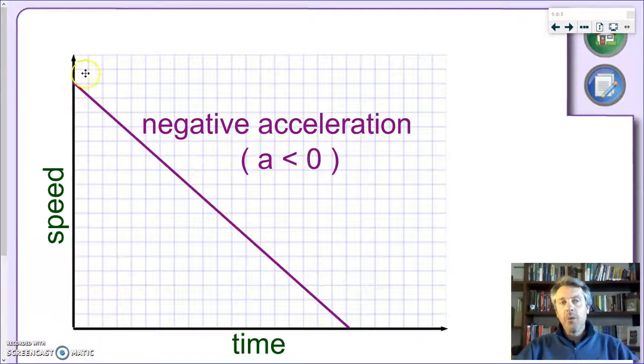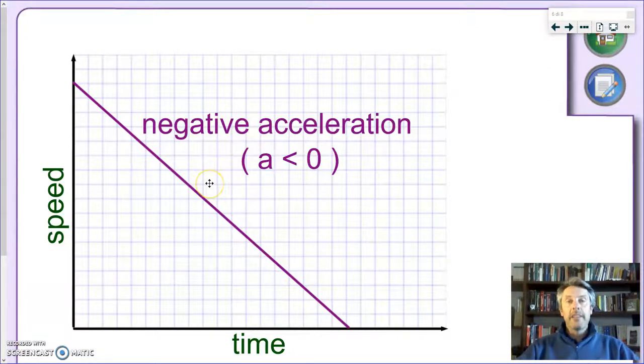Talking about slopes, what does a line with a negative slope, a straight line that goes down like this represent? It represents, obviously, an object which is decreasing the speed over time. We can call this acceleration, but remember, we can be more precise and say that this is a negative acceleration or a deceleration or a retardation. These are all synonyms. A straight line going down, decrease of speed means a negative acceleration, a less than zero.